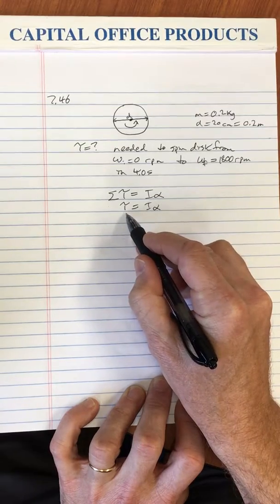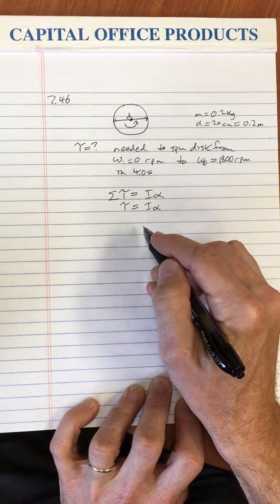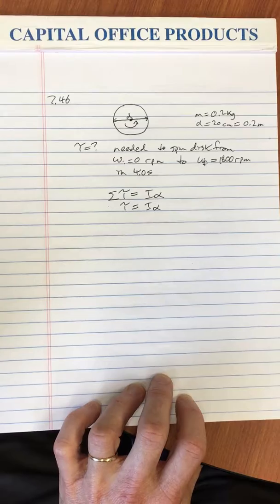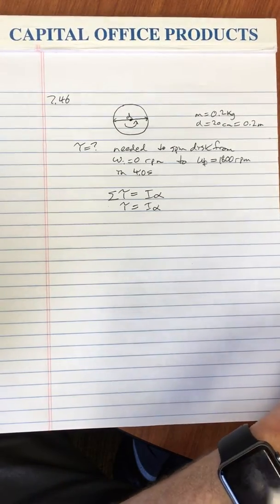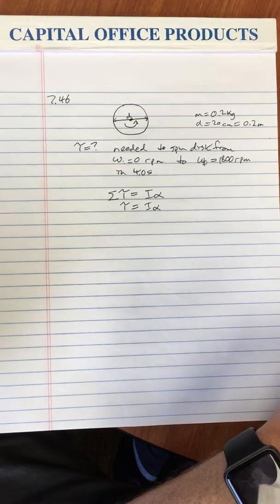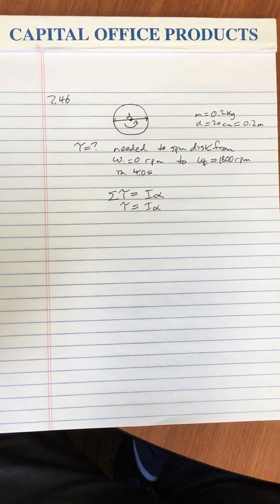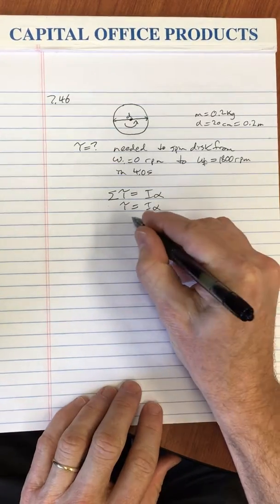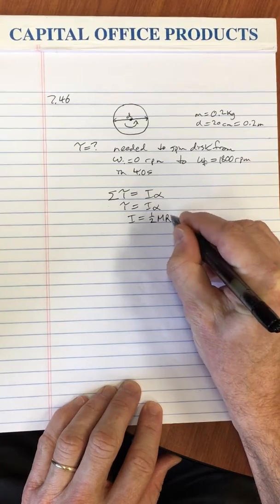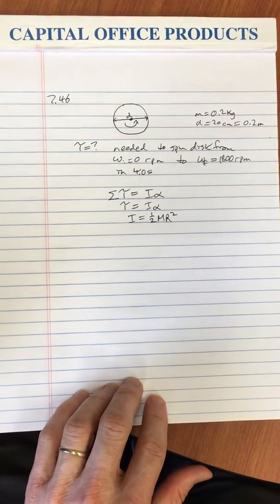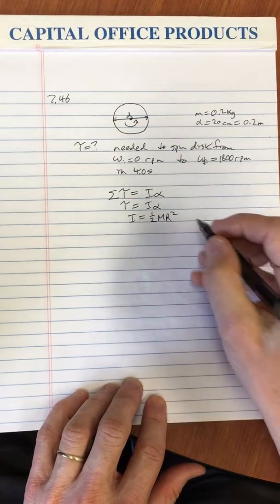This is what we need to calculate. I is the moment of inertia. What's the moment of inertia for a disc? Well, we just go back to the chapter and look at the equation for the moment of inertia of common shapes. And for a disc, I is one-half m r squared, where m is the mass of the disc, and r is the radius.